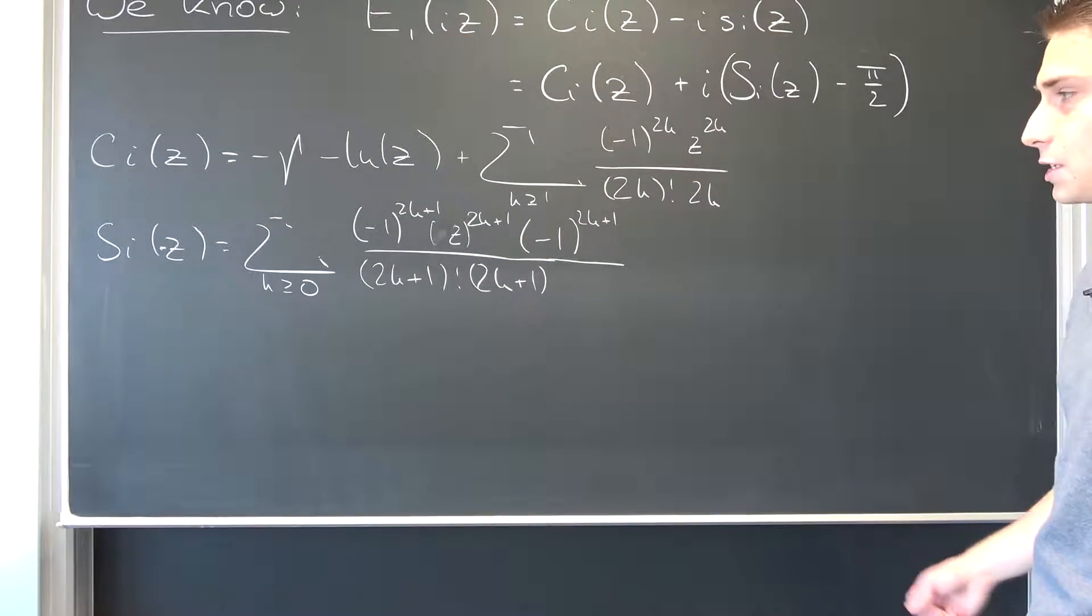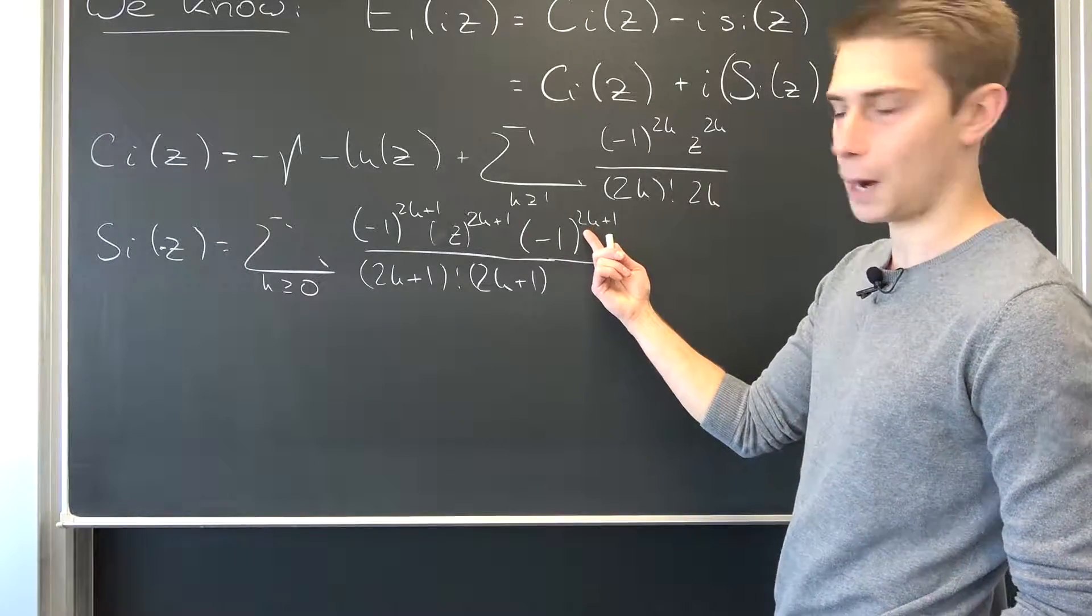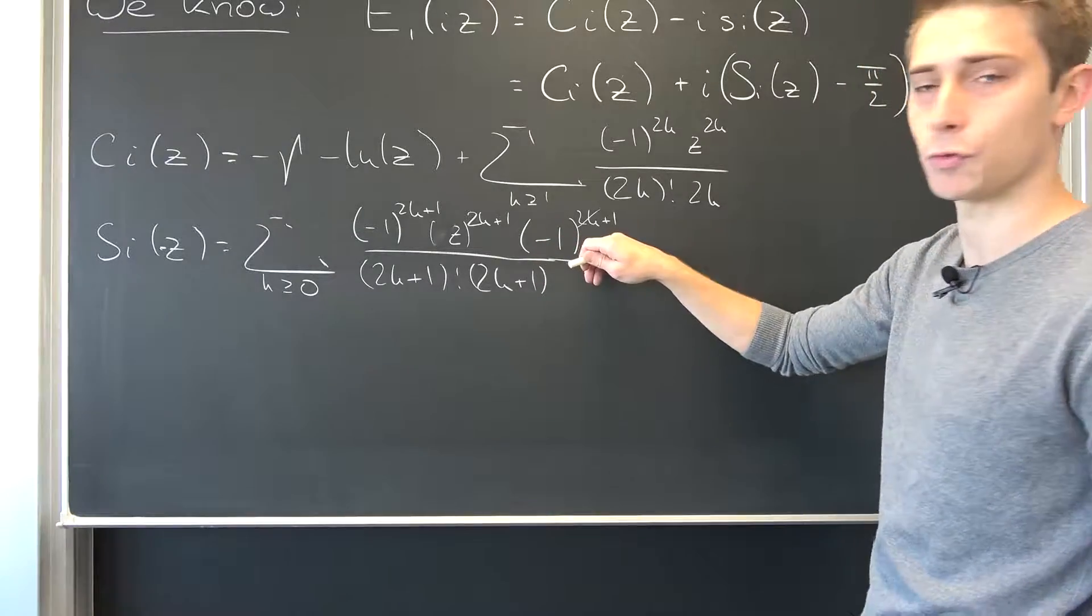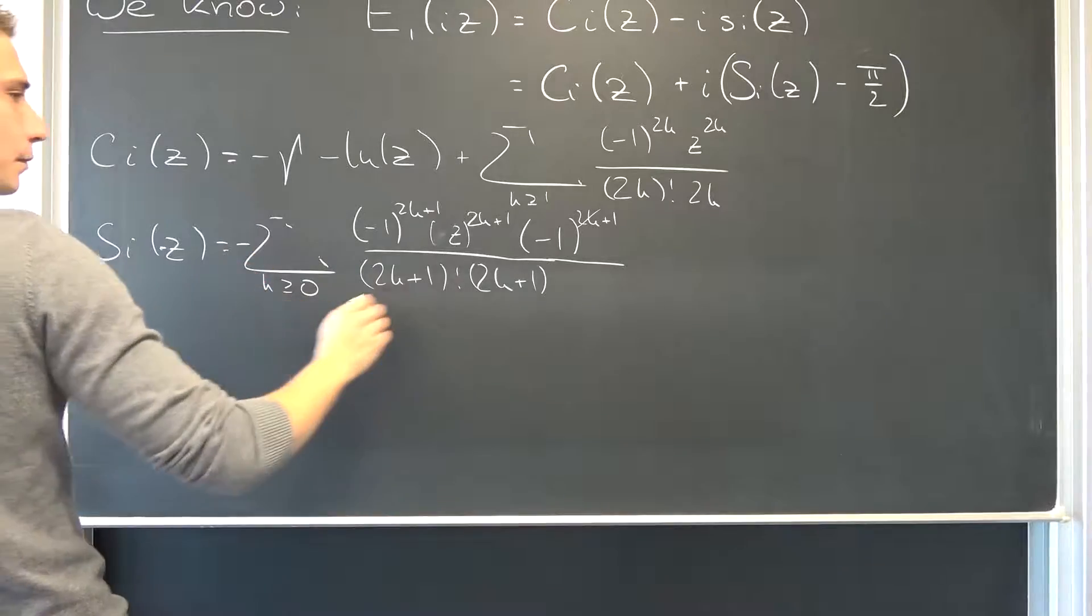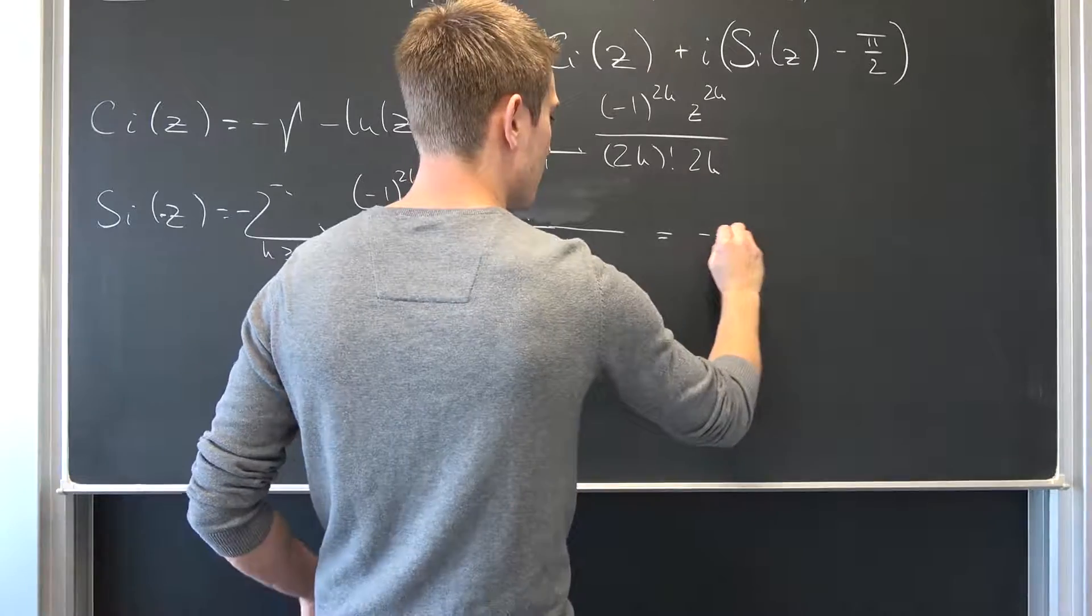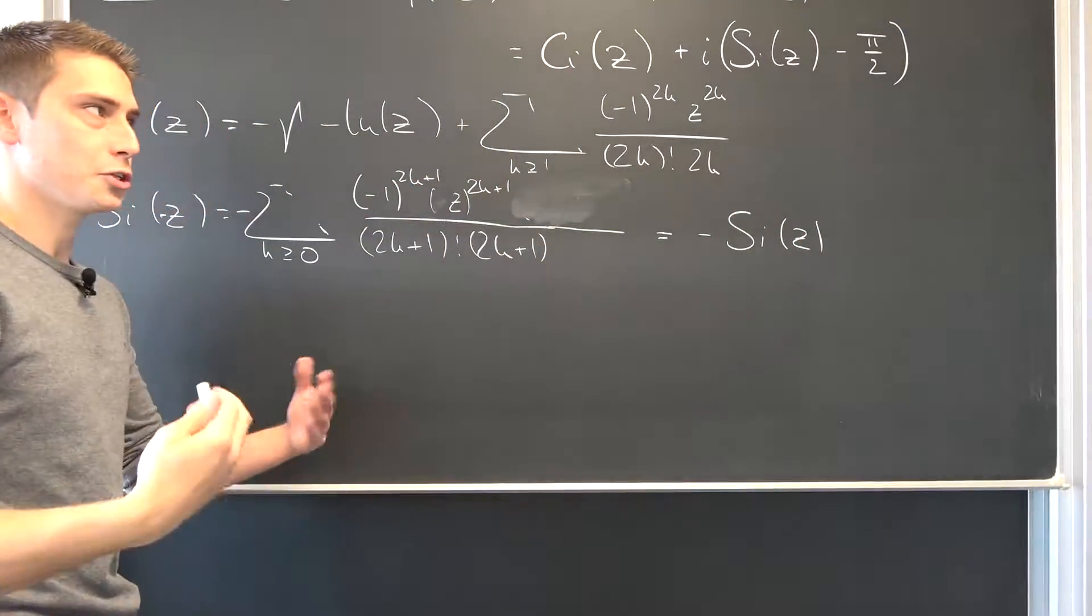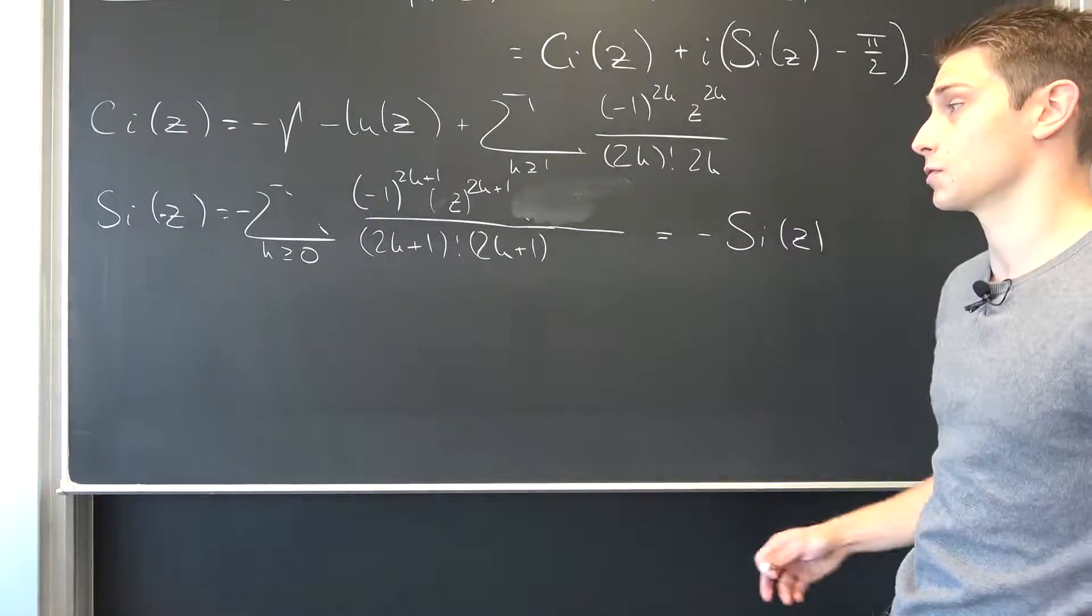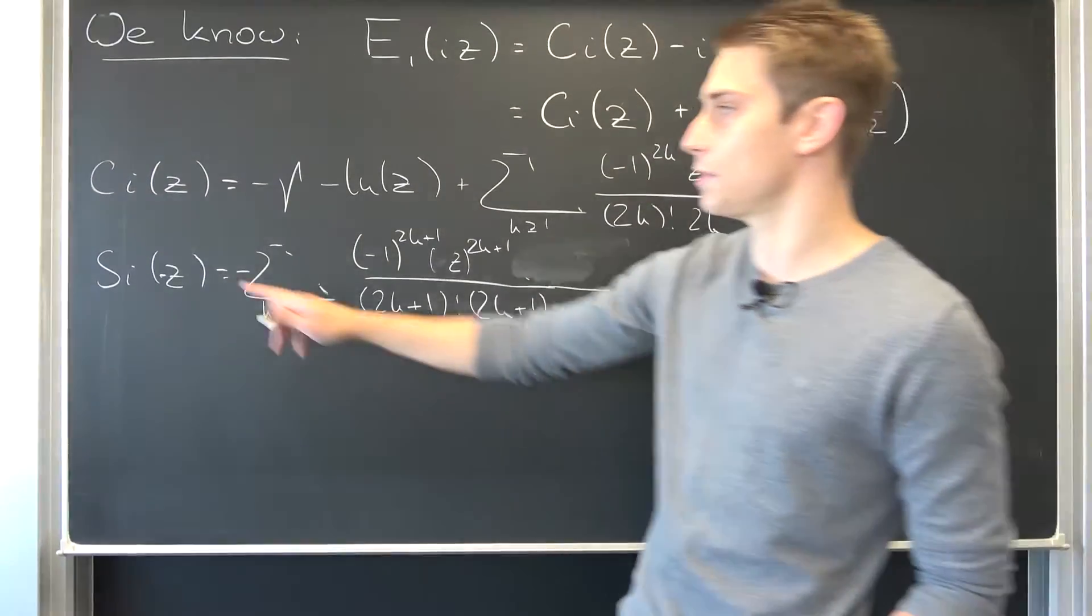Now I want you guys to notice something. Negative 1 to an even power is going to reduce to positive 1, and then we are going to have negative 1 to the first power, meaning we can just bring it to the front. We are going to get rid of all of this and finally we are going to end up with the expression negative the sine integral of z. This is something you would certainly expect because the sine of negative x is negative the sine of x. This is cool, we have found this out.